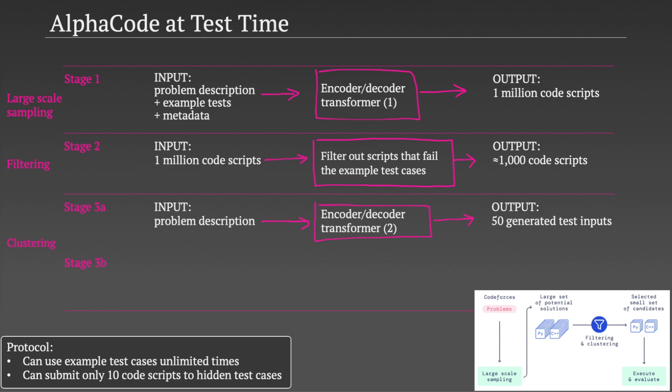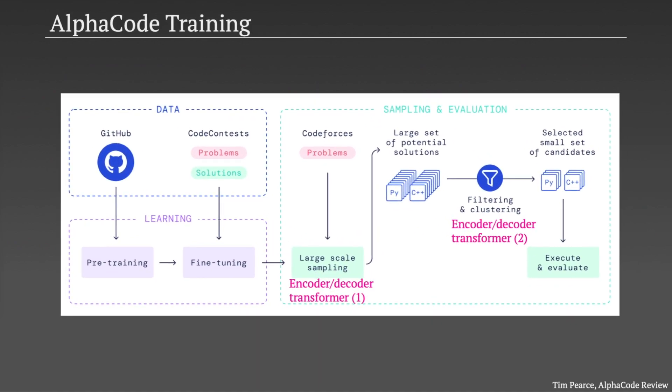Why is this a good idea? They take the view that if two scripts return the same answer for all 50 generated tests, then they probably use the same algorithm. And you probably don't want to waste two of your submissions trying both of these scripts. So they compile and run the 1000 or so scripts on these 50 generated inputs. They then cluster the scripts based on the outputs of these 50 fictional inputs. And roughly speaking, they then choose one example script from each of the clusters. And those form the 10 scripts that are submitted. If any of the 10 pass all the hidden tests, then they've succeeded in solving the coding problem. Otherwise, they fail. So that is how AlphaCode works at test time.